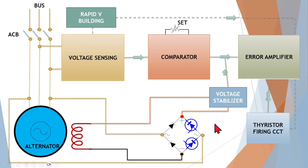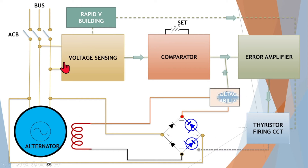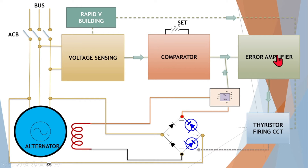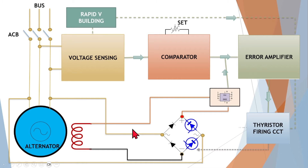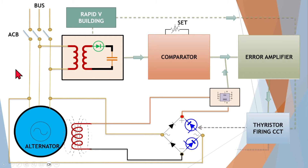Now let's look at the complete block diagram of an AVR. Basically the alternator is connected to the bus bar via ACB. It has a voltage sensing device, a comparator, and an error amplifier. The error amplifier controls a thyristor control circuit, and there is a regulated voltage bridge — a diode bridge — which produces variable DC voltage. That supply is given to the alternator exciter.